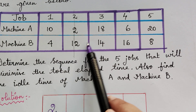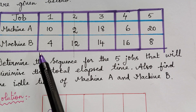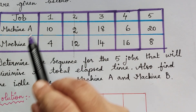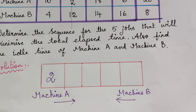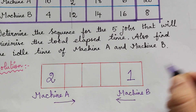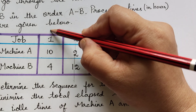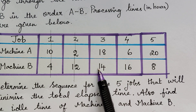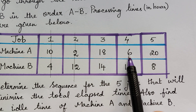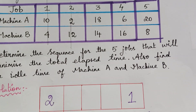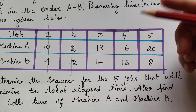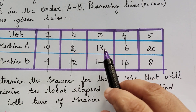Next we look for the next least value. We have 10, 4, 18, 14, 6, 16, 20 and 8. Out of all remaining values, 4 is the least. The job corresponding to 4 is job 1, and this is under machine B. So job 1 has to be written under machine B. After writing that, let's give a small strike. Out of the remaining values, the minimum value is 6. The job corresponding to 6 is job 4, and it is under machine A, so we write 4 under machine A.